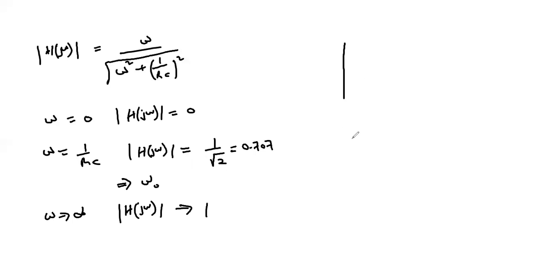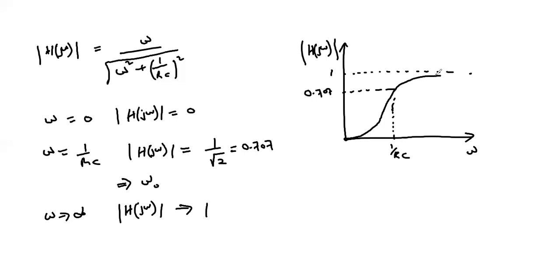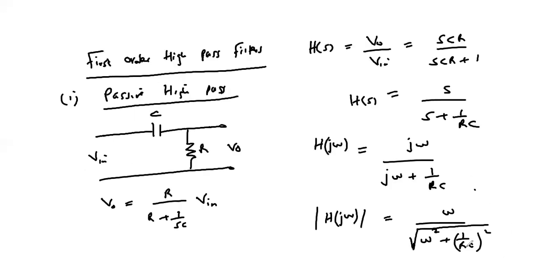We can sketch the magnitude function as a function of ω. When ω = 0, the magnitude is 0. When ω = 1/RC, the magnitude is 0.707. As ω tends to infinity, the magnitude tends to 1. This is the magnitude function of a high pass filter, confirming that our passive network implements a first-order high pass filter.